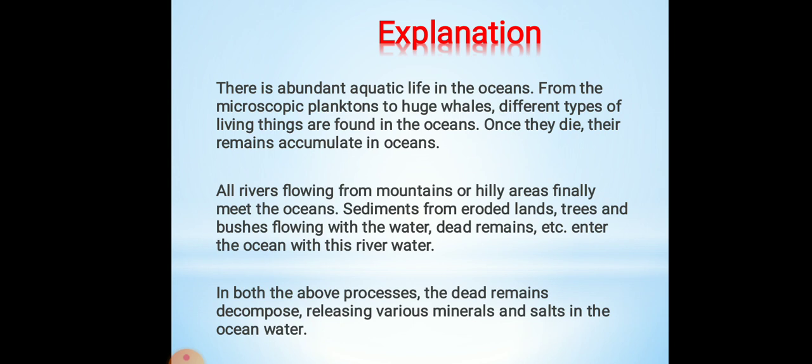So the ocean water gets different minerals and salts through two processes. First, aquatic animals die and their remains get settled in the ocean. Second, when rivers and tributaries flow to the ocean, they also carry dead remains, salts, trees, and bushes. So slowly, slowly, minerals and salt accumulate in the ocean water.